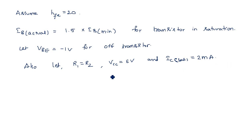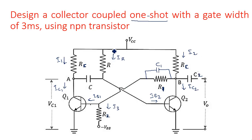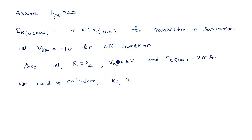We need to calculate: Rc (collector resistance), R (the resistance connected between VCC and the capacitor), VBB (the biasing supply at the bottom), R1, R2, and C.